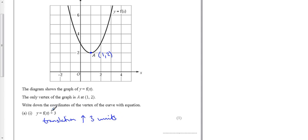Because it's outside the f function, it means that the y-value gets increased by 3. So it's 1, 2, 3, it's going to end up there. Therefore A becomes (1, 5) - the y-value's gone up to 5.